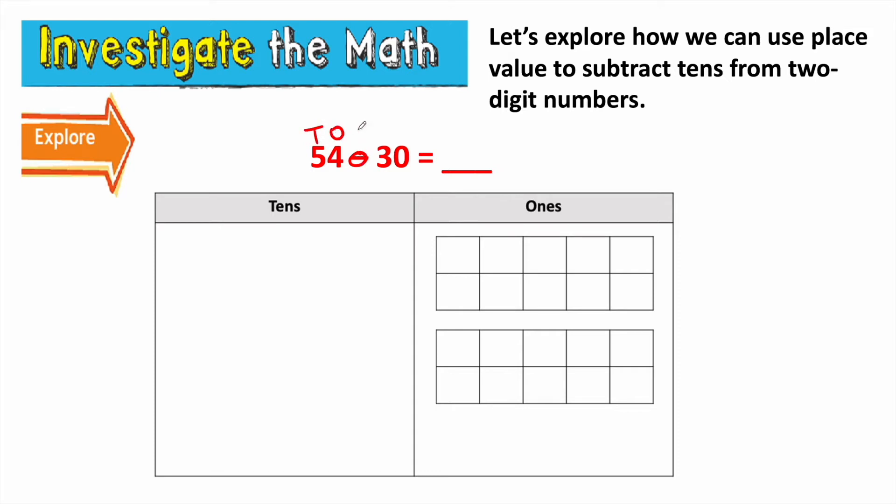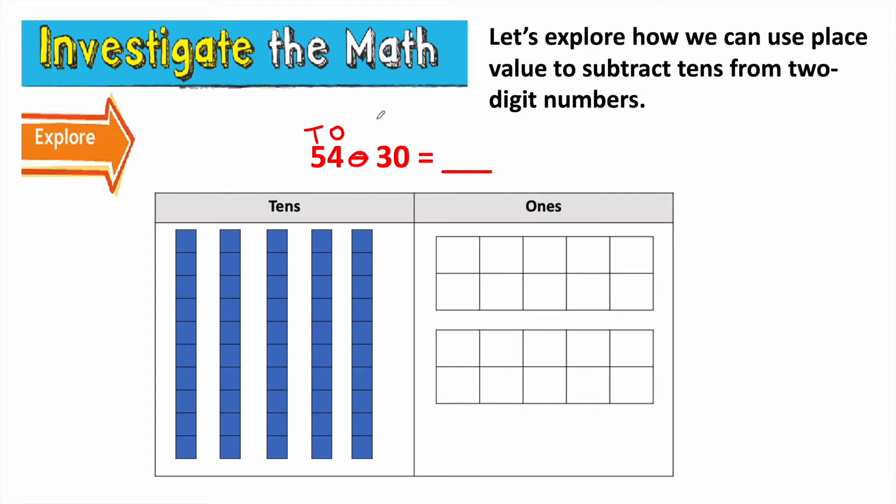54 is our whole. 54 has five tens and four ones. And we want to take away 30. Another way to think about taking away 30 is to take away three tens. Well, one way I could take away 30 is by counting back.